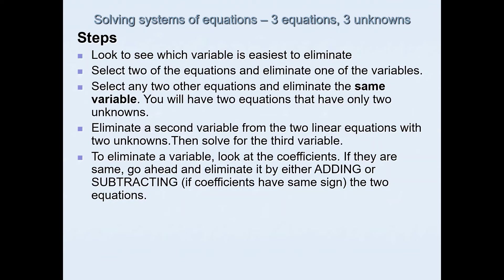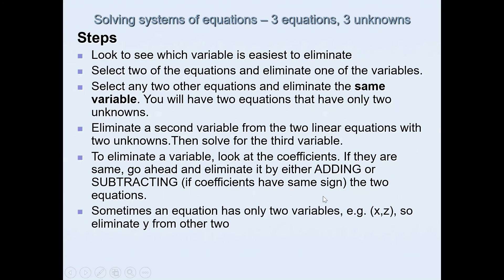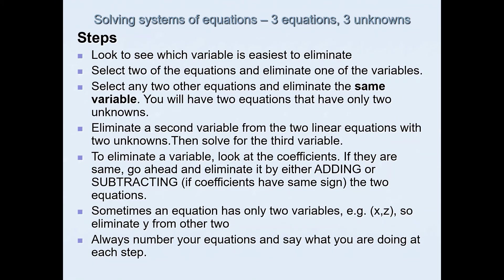To eliminate a variable, look at the coefficients. If they are the same, you can eliminate by adding or subtracting — subtract if the coefficients have the same sign, or add if the signs are opposite. If the coefficients are not the same, multiply by a constant to make them equal, then add or subtract. Sometimes an equation will only have two variables, like x and z — in that case, eliminate y from the other two equations. Always number your equations and state what you are calculating at each step, as communication is required at Level 3.